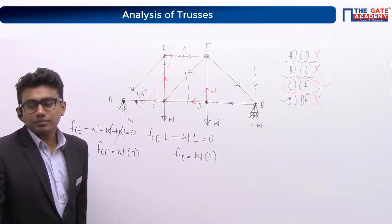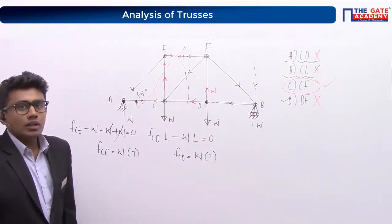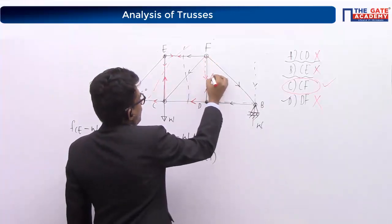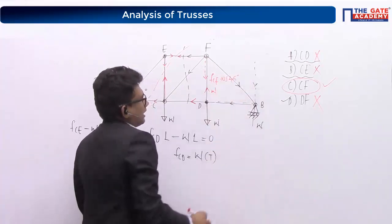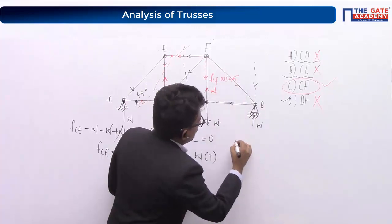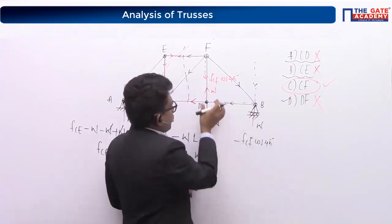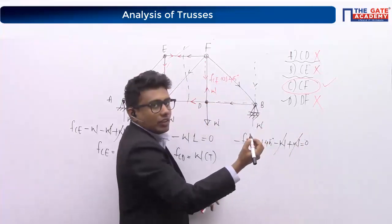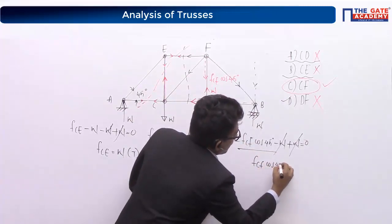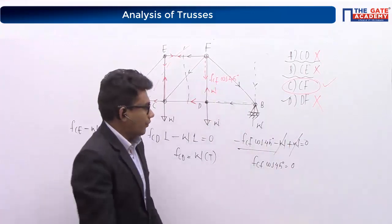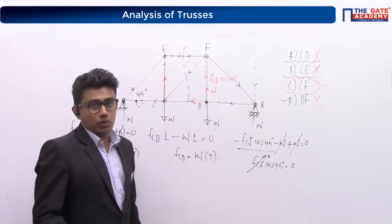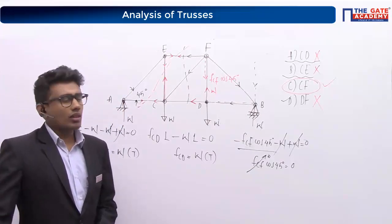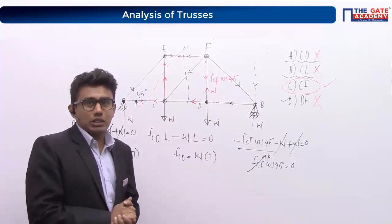By elimination, CF must be the zero force member. To verify: cutting a section through EF, CF, and CD, and applying sigma Fy = 0: F_CF cos 45 (downward) minus W (load) plus W (reaction) = 0. The W terms cancel, giving F_CF cos 45 = 0, which means F_CF = 0. So CF is confirmed as the zero force member. The answer is option C.